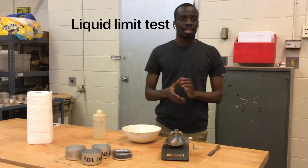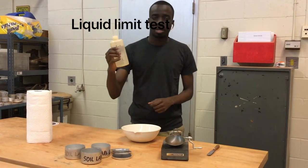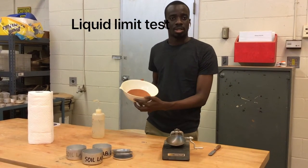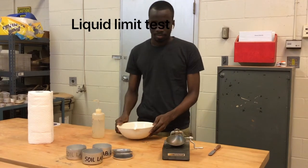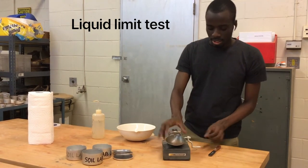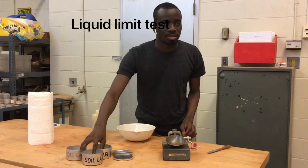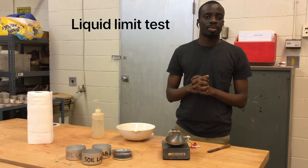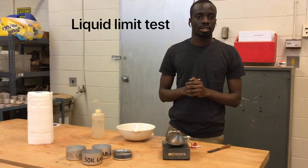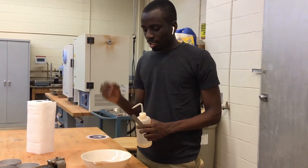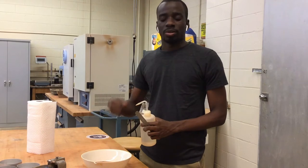This is the first section of the Atterberg limit test. This is my water in my wash bottle, and this is my 250 grams of soil passing through number 40 sieve. This is my Casagrande apparatus, my spatula, and my grooving tool. These are my three cans which I'll be storing the test specimens for moisture content. Now I'm going to mix the sample and make sure that the moisture content is such that when we rotate the Casagrande apparatus, the blows fall between 30 and 40.